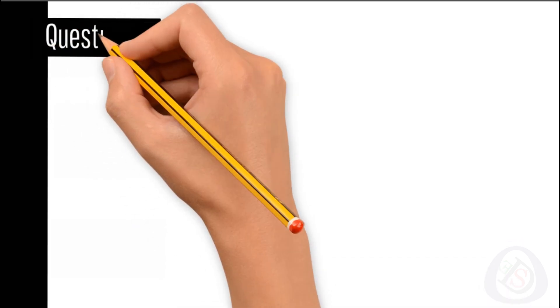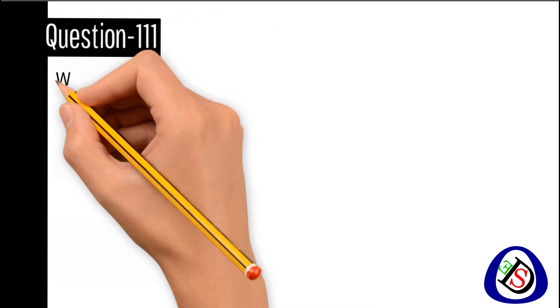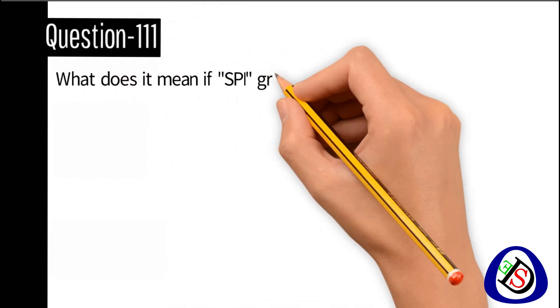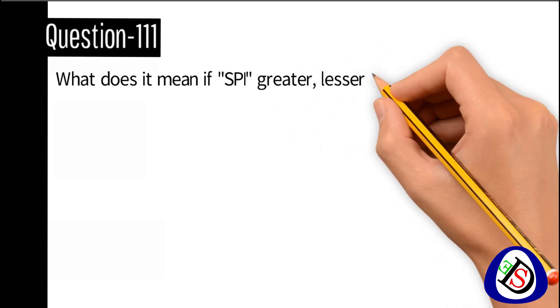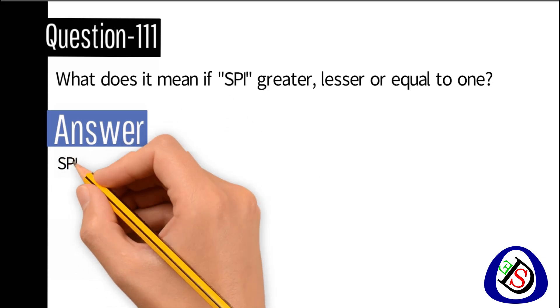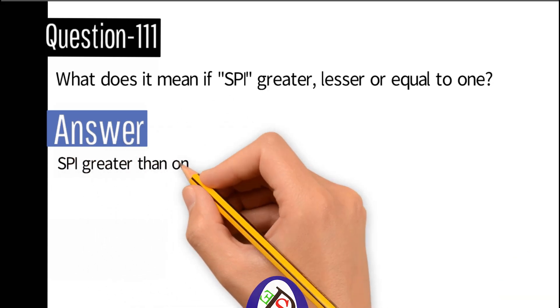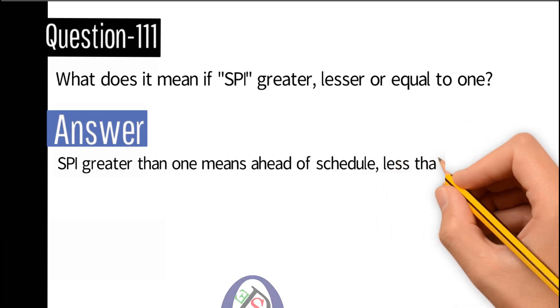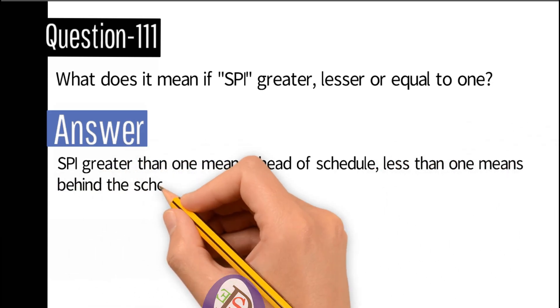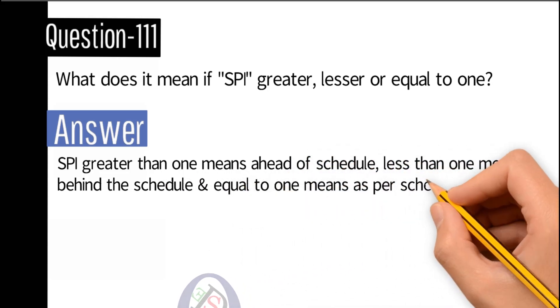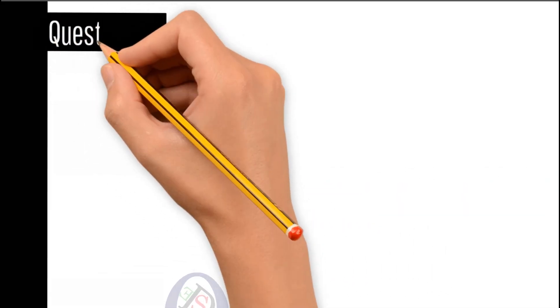Question number 111: What does it mean if SPI is greater, lesser, or equal to 1? Answer: SPI greater than 1 means ahead of schedule, less than 1 means behind schedule, and equal to 1 means as per schedule.